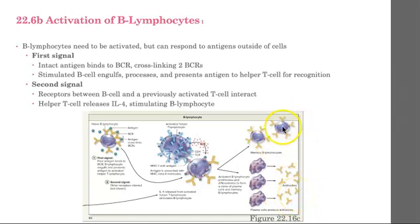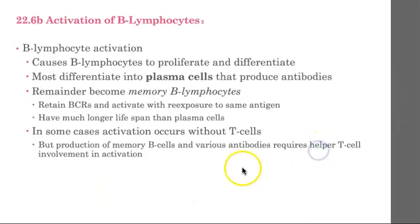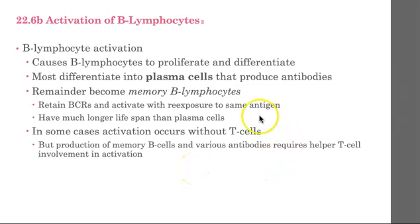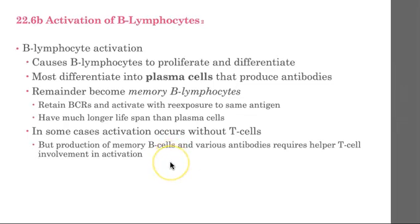Memory B cells have a longer lifespan than plasma cells. In some cases, activation without T cells can take place, but the production of memory B cells and certain antibodies will require helper T cell involvement in order to truly be activated.